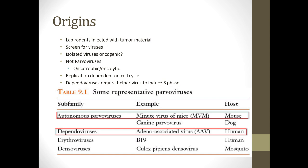Oncotrophic means that these viruses have a propensity or desire to infect cancer cells. The reason is probably that cancer cells are kind of stuck in the S phase — because they're constantly synthesizing stuff and rapidly dividing. So these viruses' replication was dependent on the cell cycle because that's when DNA polymerases are present.